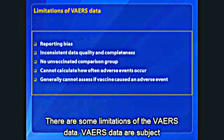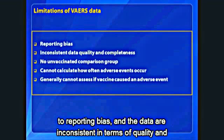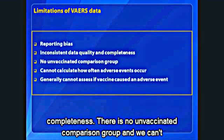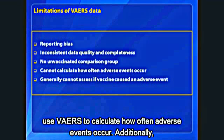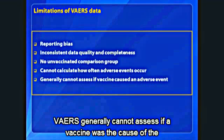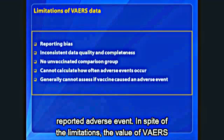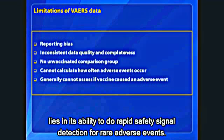There are some limitations of the VAERS data. VAERS data are subject to reporting bias, and the data are inconsistent in terms of quality and completeness. There is no unvaccinated comparison group, and we can't use VAERS to calculate how often adverse events occur. Additionally, VAERS generally cannot assess if a vaccine was the cause of the reported adverse event. In spite of the limitations, the value of VAERS lies in its ability to do rapid safety signal detection for rare adverse events.